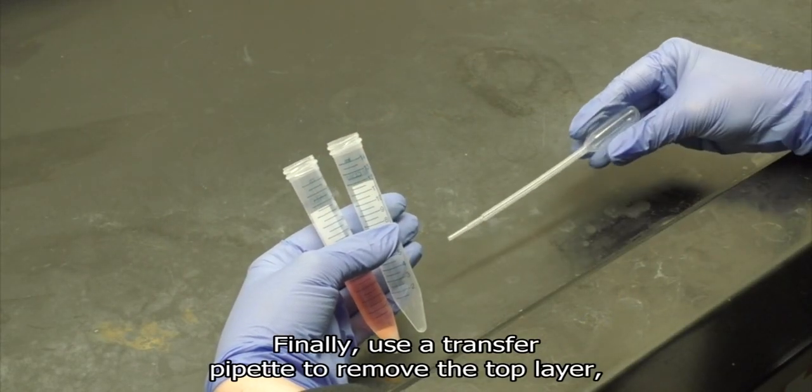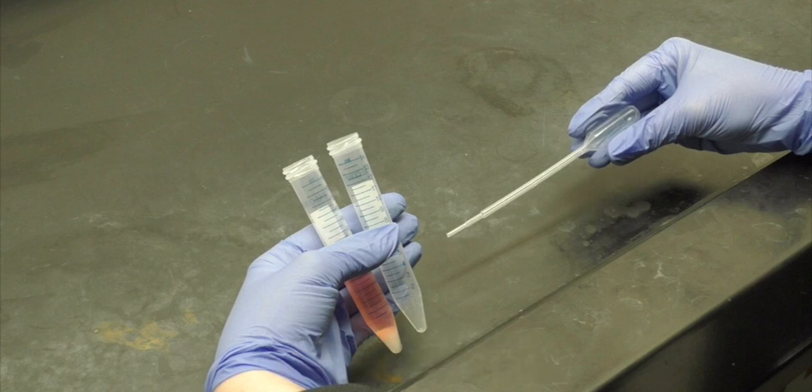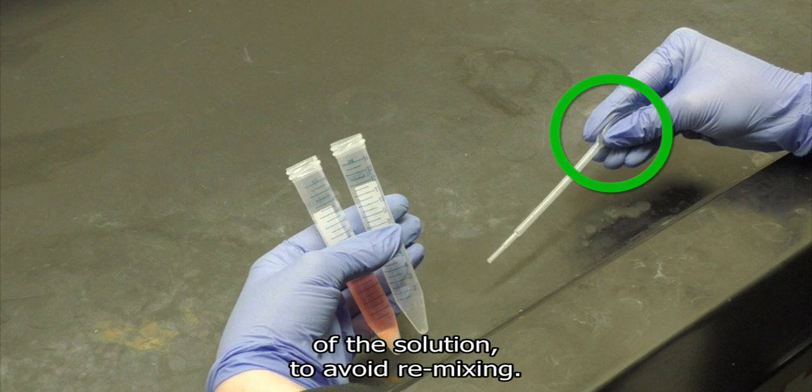Finally, use a transfer pipette to remove the top layer or supernatant from your centrifuge sample. Be sure to expel air from the pipette while it is outside of the solution to avoid remixing.